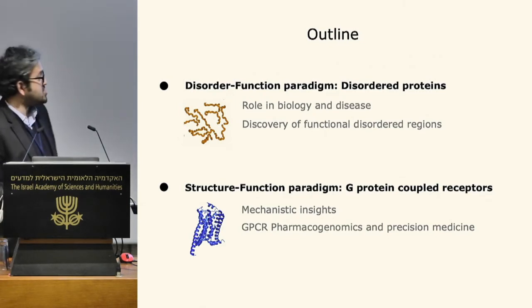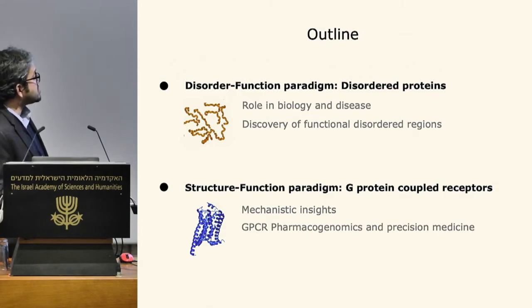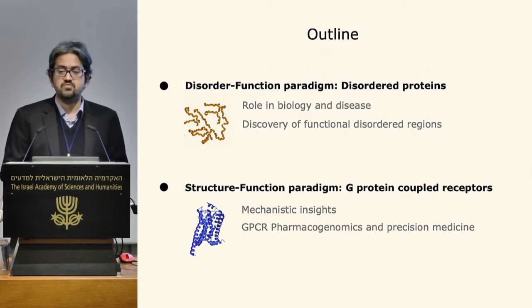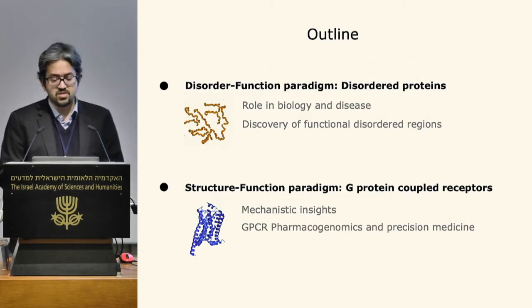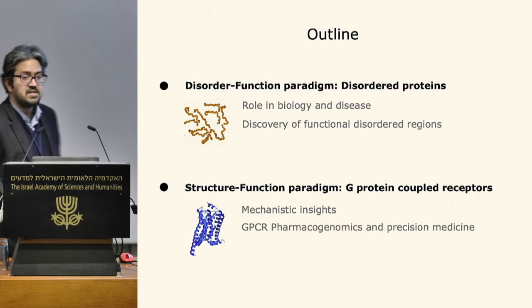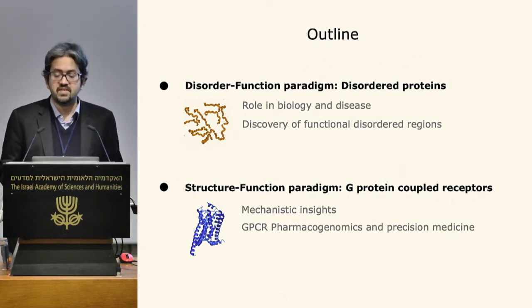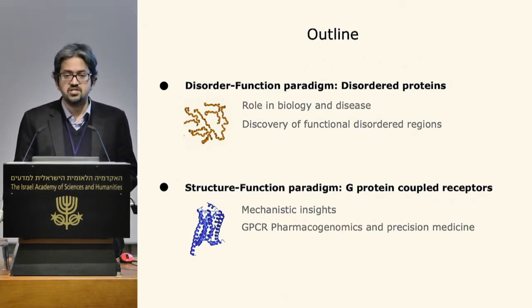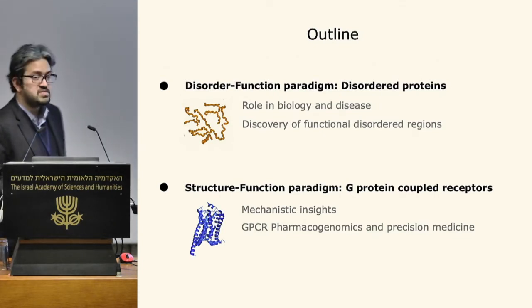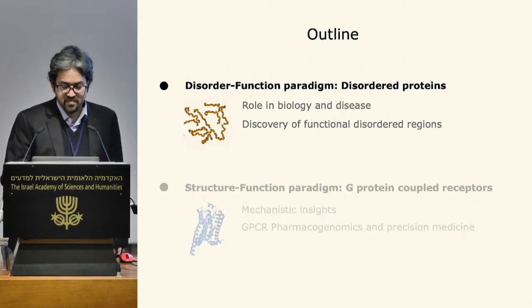A key question we address is how function is achieved by disordered regions. My talk has two halves. In the first part, I'll present work on disordered proteins highlighting their role in biology and disease, and discuss high-throughput approaches to understand functional regions in unstructured segments. In the second part, I'll discuss G-protein coupled receptors, mechanistic insights from structural comparisons, and the diversity in polymorphisms in the human population.